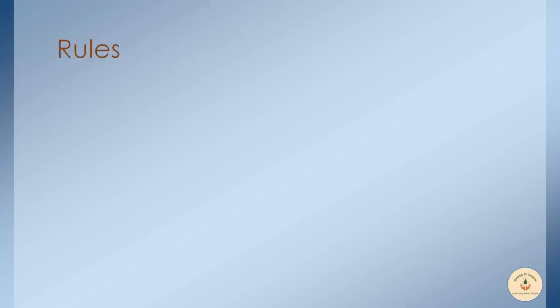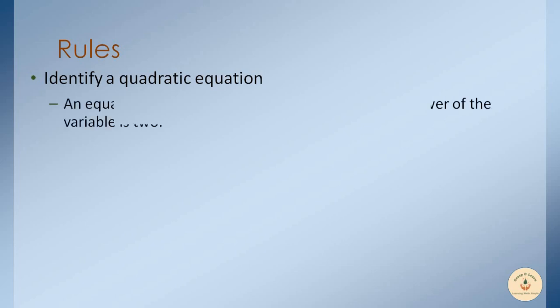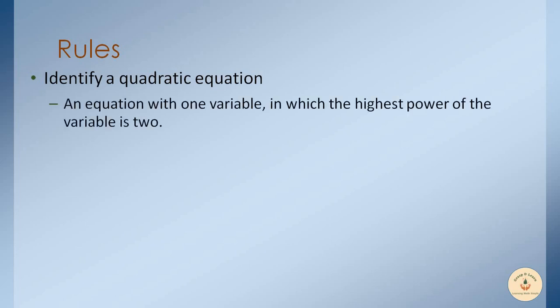Before we move into solving the quadratic equation, let's go through a few important rules. Firstly, we need to identify whether the given equation is quadratic or not. The rule says: an equation with one variable in which the highest power of the variable is 2. This means the equation can have only one unknown and the highest power of that unknown should be 2.